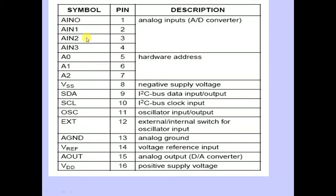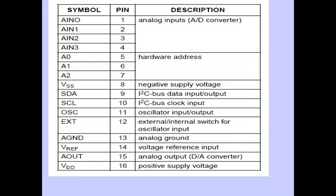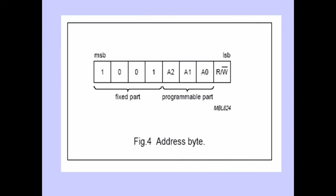To summarize the pins: AIN0, AIN1, AIN2, AIN3 are the four analog inputs. A0, A1, A2 are the three hardware address lines. VSS is ground. SDA and SCL are the I2C communication lines. Pins 11 and 12 are oscillator input and output. Additional pins include analog ground, V-reference voltage, analog out, and VDD (positive supply voltage).